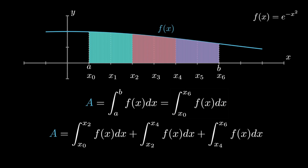We take limits from x0 to x2 because we need 3 points to apply the Simpson's one-third formula: two extreme limits and the midpoint. Here x1 is the midpoint of x0 and x2. Each segment has length h, so the distance between x2 and x0 is 2h. Similarly x3 and x5 are midpoints of (x2, x4) and (x4, x6) respectively, so x4−x2 = 2h and x6−x4 = 2h.